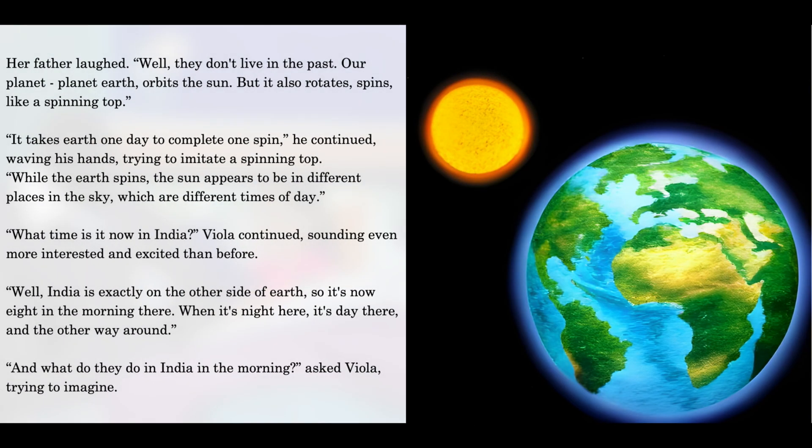"Well, they don't live in the past. Our planet, planet Earth, orbits the sun, but it also rotates — spins like a spinning top. It takes Earth one day to complete one spin," he continued, waving his hands, trying to imitate a spinning top. "While the Earth spins, the sun appears to be in different places in the sky, which are different times of day. What time is it now in India?"